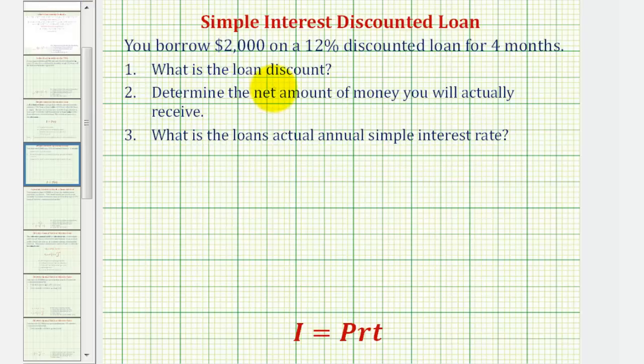So number one, remember the discount is the interest paid up front. So we'll use the simple interest rate formula. We'll have I, or the discount, is equal to P, the loan amount, which is $2,000.